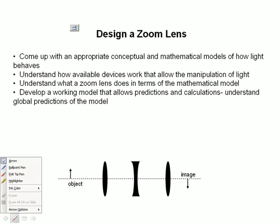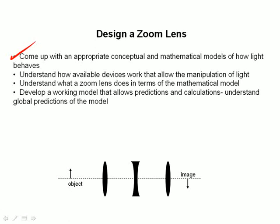As we've seen before, there are several steps in doing this, and we're slowly working our way through what we need. We've already come up with a conceptual and mathematical model of how light behaves when it hits surfaces. We've just finished understanding how available devices, i.e. lenses, work that allow the manipulation of light.